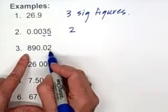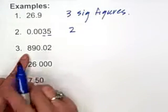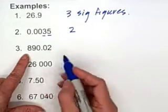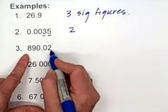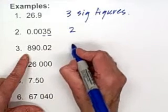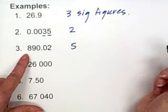890.02, the zeros within the number are counted. So we count all five of these digits. We have five significant figures.